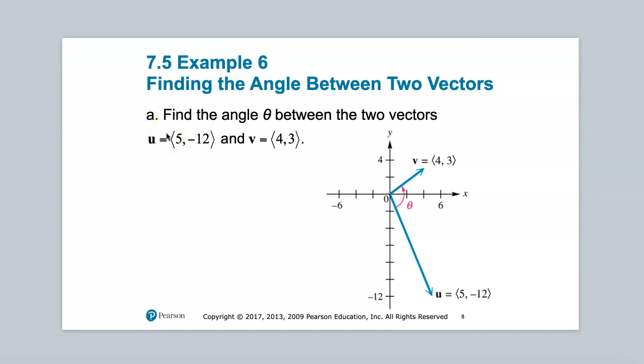And the way that we can figure this out is using the geometric interpretation of the dot product, which is found on the bottom of page 340. So if you look at the bottom of page 340 of your textbook, you'll see the geometric interpretation of the dot product.